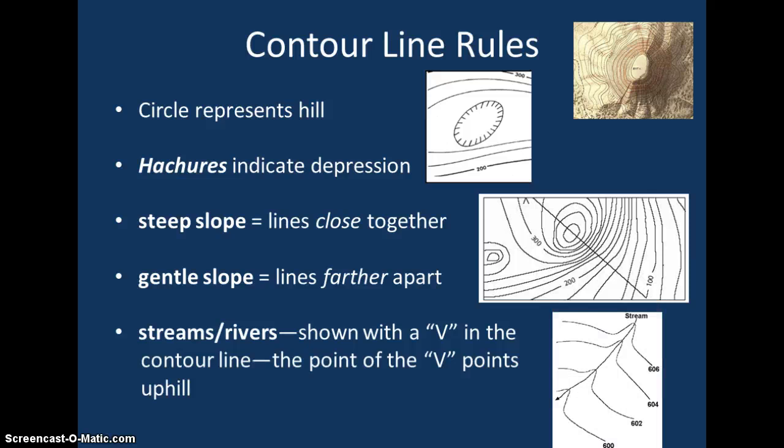Streams and rivers are shown with a V across the contour line, as you see here. The point of the V points uphill, so this stream is flowing in a southwest direction.